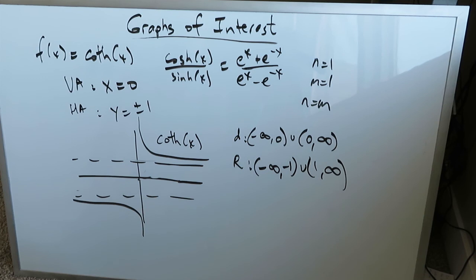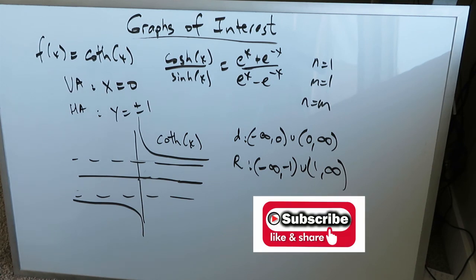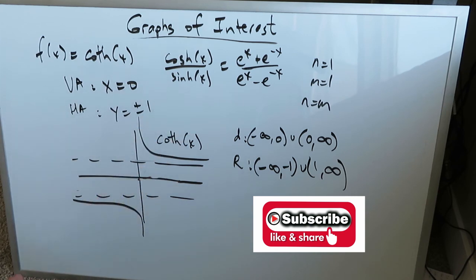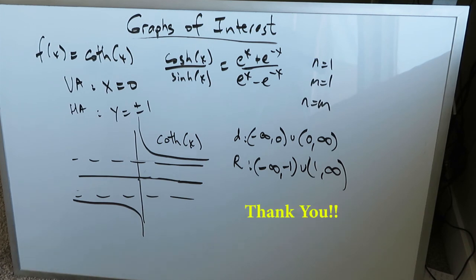In this video we looked at quadratic-type graphs where exponents increased in even character, then cubic-type graphs where exponents increased to higher odd numbers. We also looked at the inverse relationship between exponential and logarithmic, and the inverse relationships between sine, cosine, and tangent. Then we looked at all six hyperbolic graphs: hyperbolic sine, cosine, cosecant, secant, tangent, and cotangent. I hope you enjoyed this video. Thank you for watching. Have a nice day.